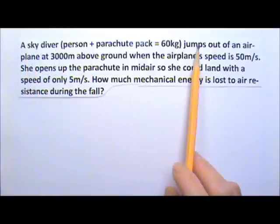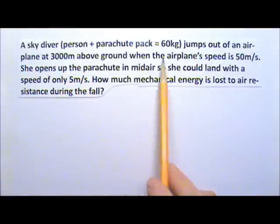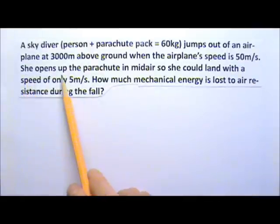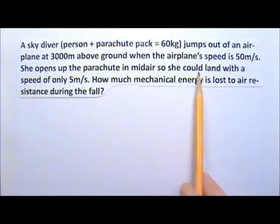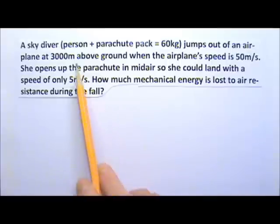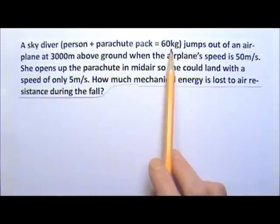A skydiver jumps out of an airplane at 3,000 meters above ground when the airplane's speed is 50 meters per second. She opens up the parachute in midair so she could land with a speed of only 5 meters per second. How much mechanical energy is lost to air resistance during the fall? The person plus the parachute pack together is 60 kilograms.